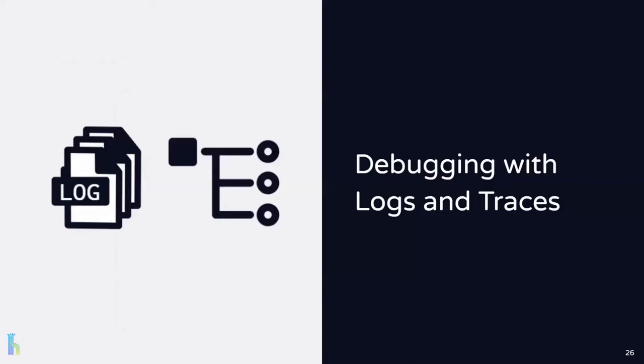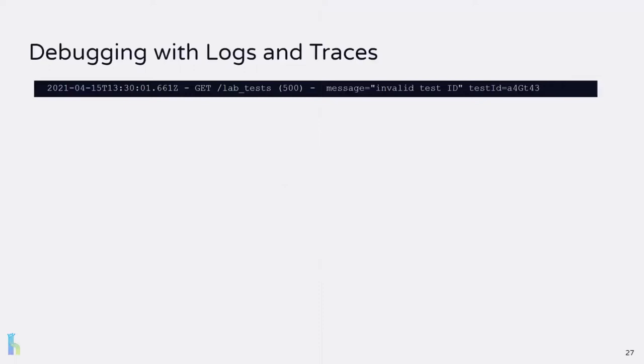Amy and her team have decided to aggregate their logs and implement distributed tracing. As they begin researching their options, Amy also thinks about how they will use these two types of telemetry data together. To get the most out of both logs and traces, they'll often want to go back and forth between the two, because logs contain specific details about events and traces contain that high-level picture of the execution path. Let's say Amy is investigating a user-reported error occurring in the lab test service. She's found a log that shows the error, which gives her details, but she needs more context about the request that caused it. This is exactly what traces are good at — but how does Amy find the trace associated with the specific log she's looking at?